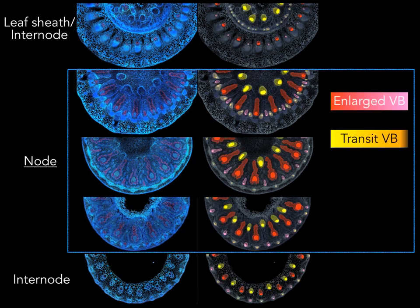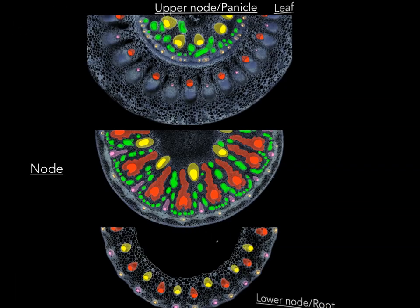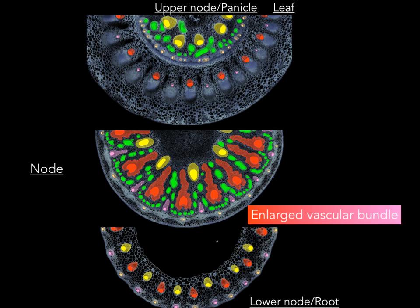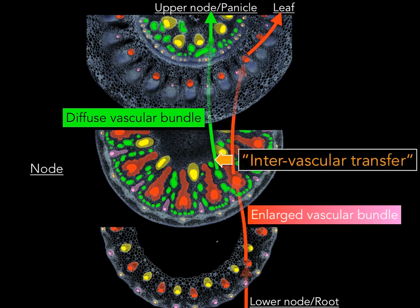This is a cross section of a rice node. Four different vascular bundles are present in the same node. Enlarged vascular bundles are connected between the lower nodes or roots and the leaf, while diffuse vascular bundles initiate at a node and connect to the upper organs such as young leaf and panicles. Therefore, a transfer of mineral nutrients from enlarged vascular bundle to diffuse vascular bundle is required to provide mineral nutrients to the developing tissue, which has high demand for mineral nutrients for active growth. This process is called intervascular transfer.